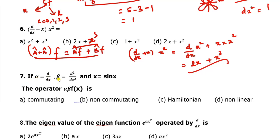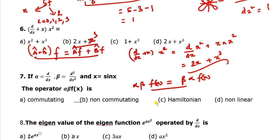Question 7: If alpha equals d/dx, beta equals d²/dx², and f(x) equals sin(x), is the operator alpha-beta commutating or non-commutating? For a commutating operator, alpha-beta applied to f(x) must equal beta-alpha applied to f(x). If they are not equal, then the operators are non-commutating.